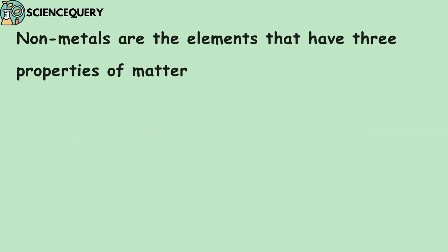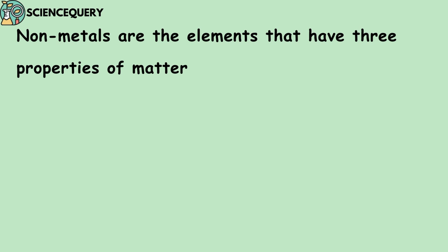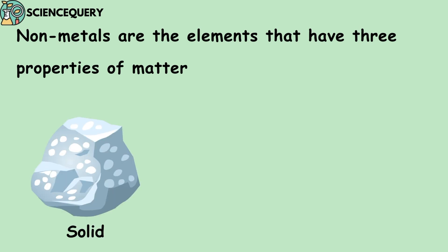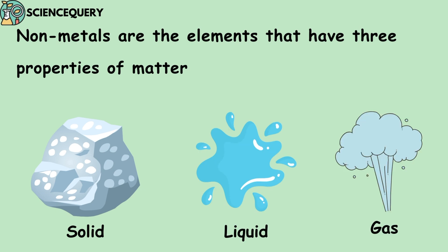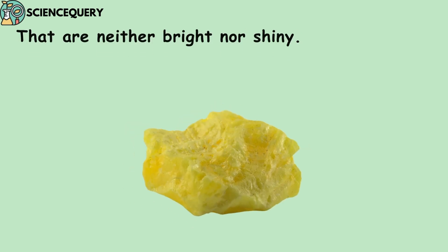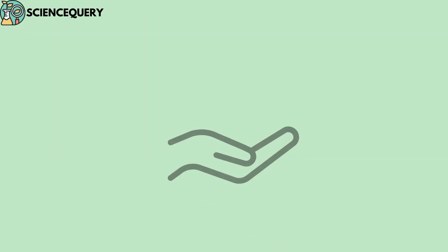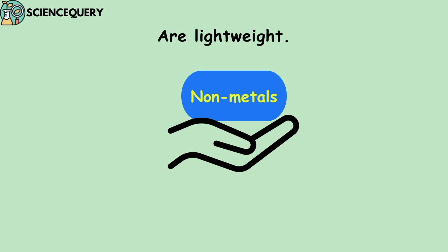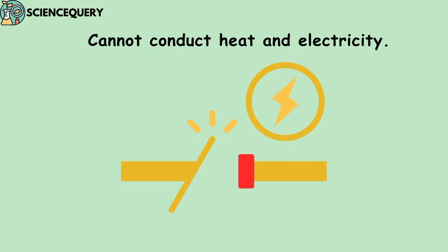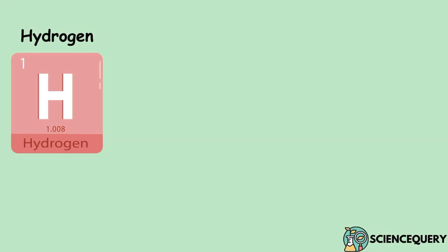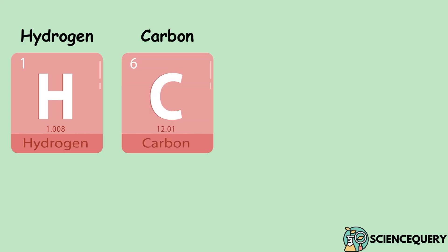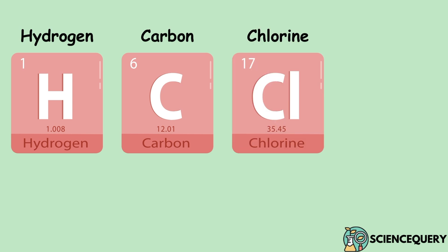Now the next section is about non-metals. Non-metals are elements that can exist in three states of matter — solid, liquid, and gas. Non-metals are neither bright nor shiny; they cannot reflect light and are lightweight. Non-metals cannot conduct heat and electricity. Some examples of non-metals are hydrogen, carbon, chlorine, and nitrogen.